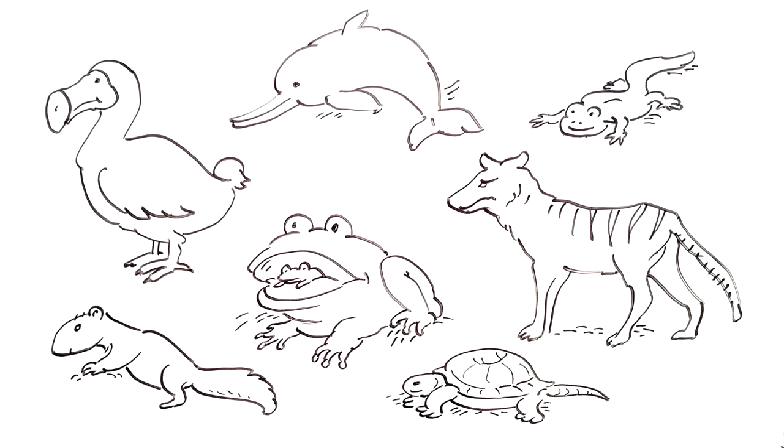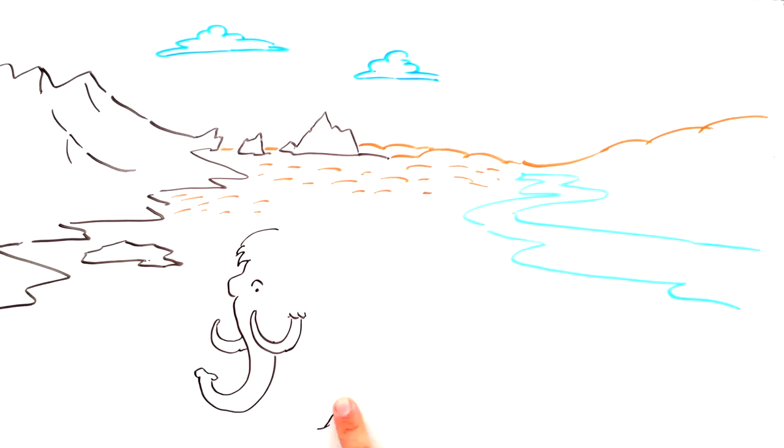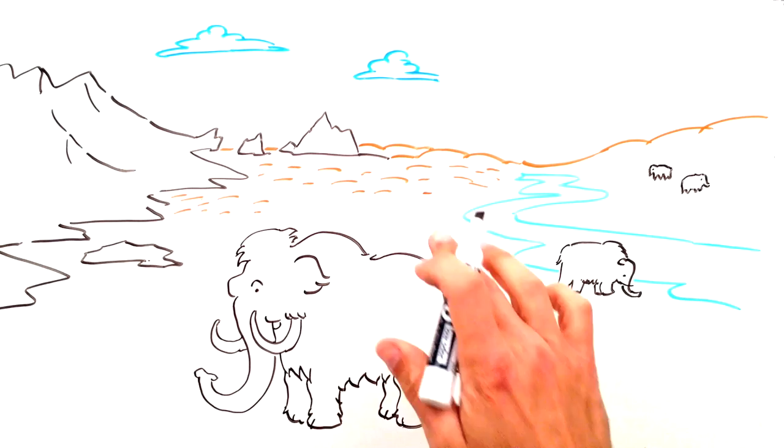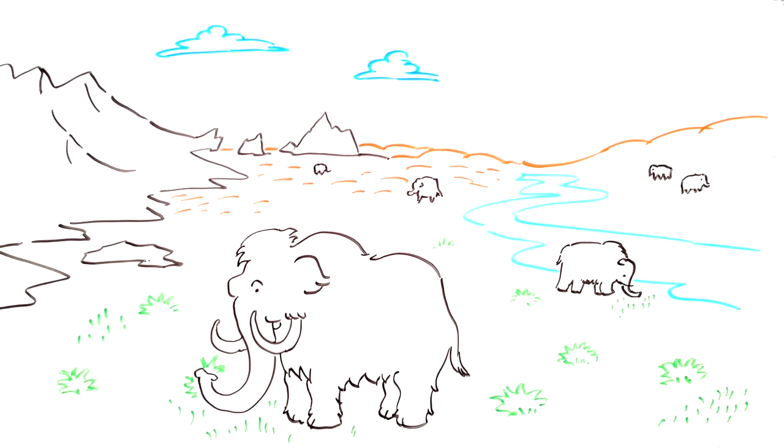For scientists who are trying to resurrect the woolly mammoth, they point out how the arctic tundra is beginning to open up again due to changing temperatures, and that this awesome herbivore might actually be essential in keeping this massive new ecosystem in balance.